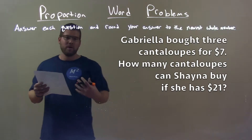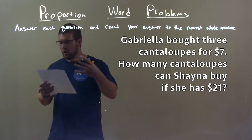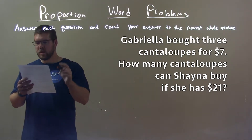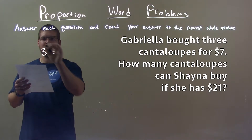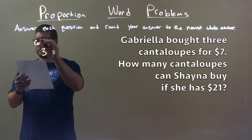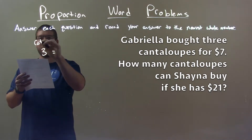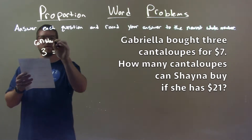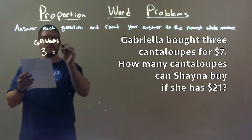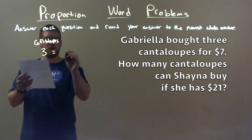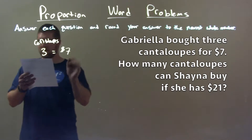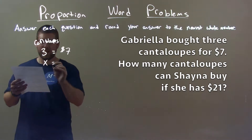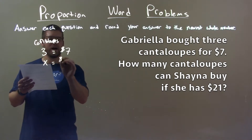What I want to do is set up for my word problem kind of a ratio here. We know three cantaloupes for $7, and we want to see how many cantaloupes you can buy — X cantaloupes for $21.